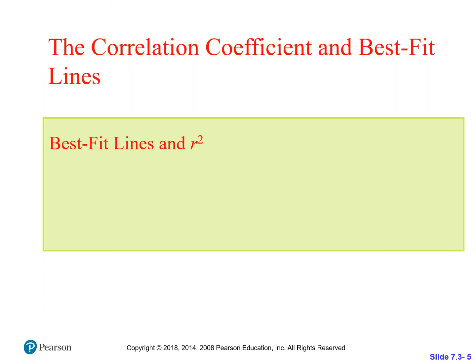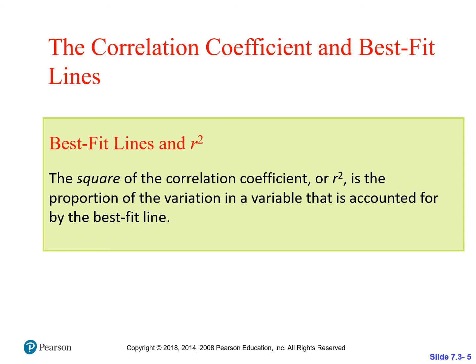Let's talk about best fit lines and R squared. The square of your correlation coefficient, R squared, is the proportion of variation in a variable that is accounted for by the best fit line. The R squared value lets you know how much of the variation — and remember, variation just means difference — in a variable is accounted for by the best fit line. In other words, R squared is a measure of how good the best fit line is and how well it captures what's going on in the data.